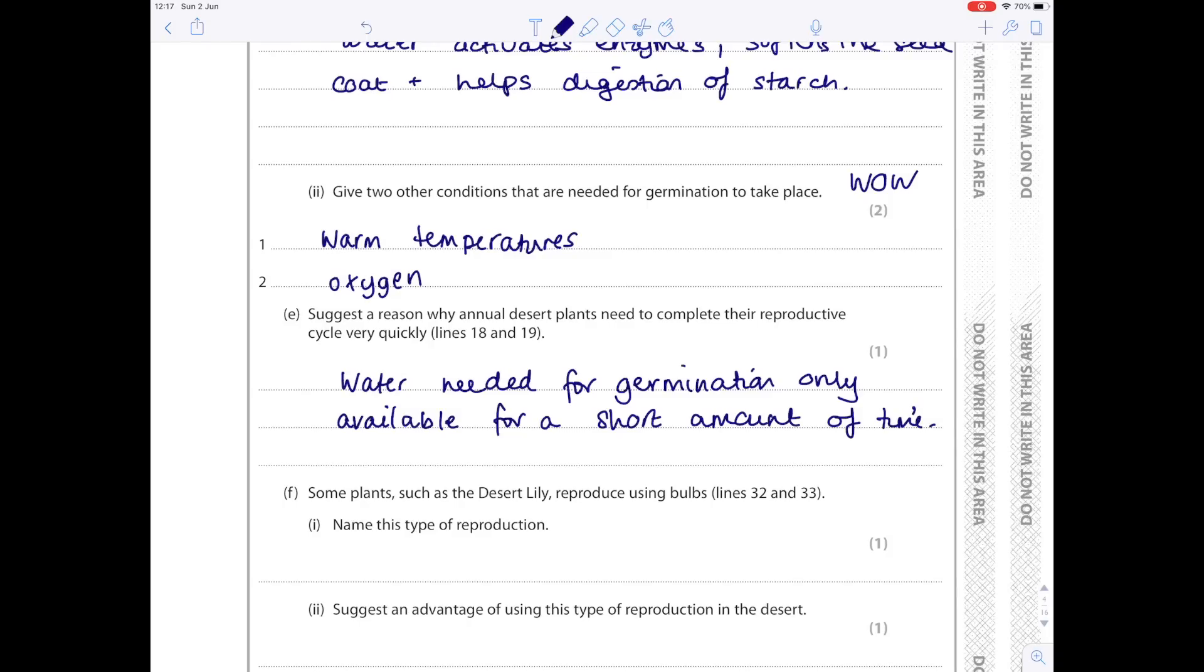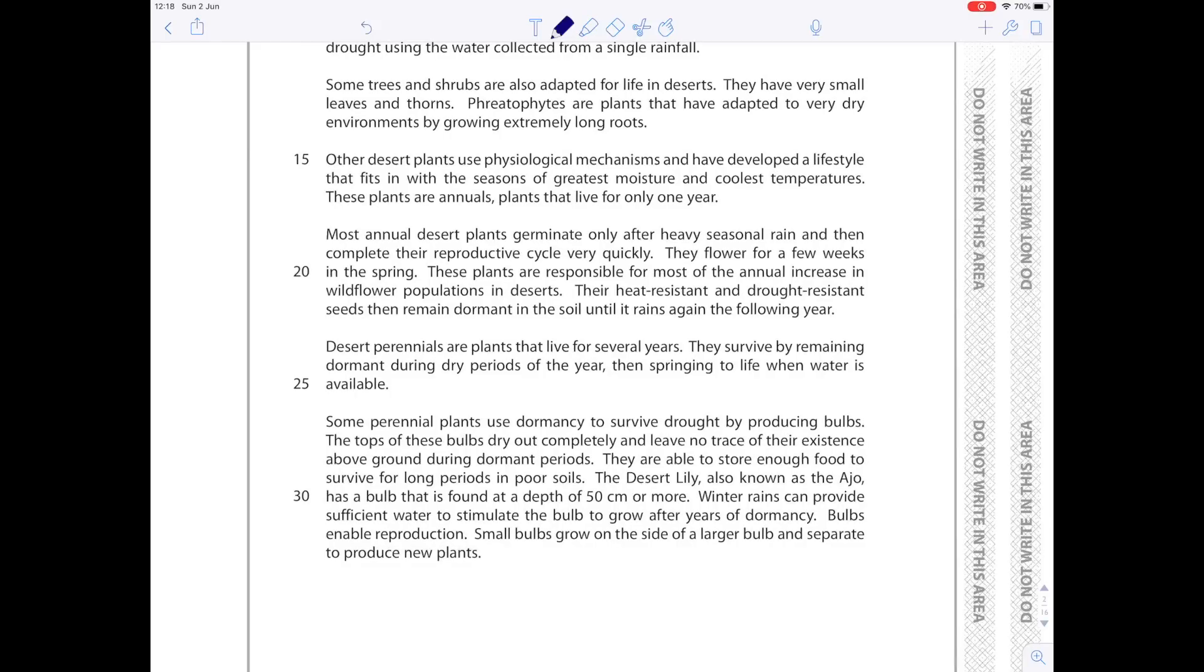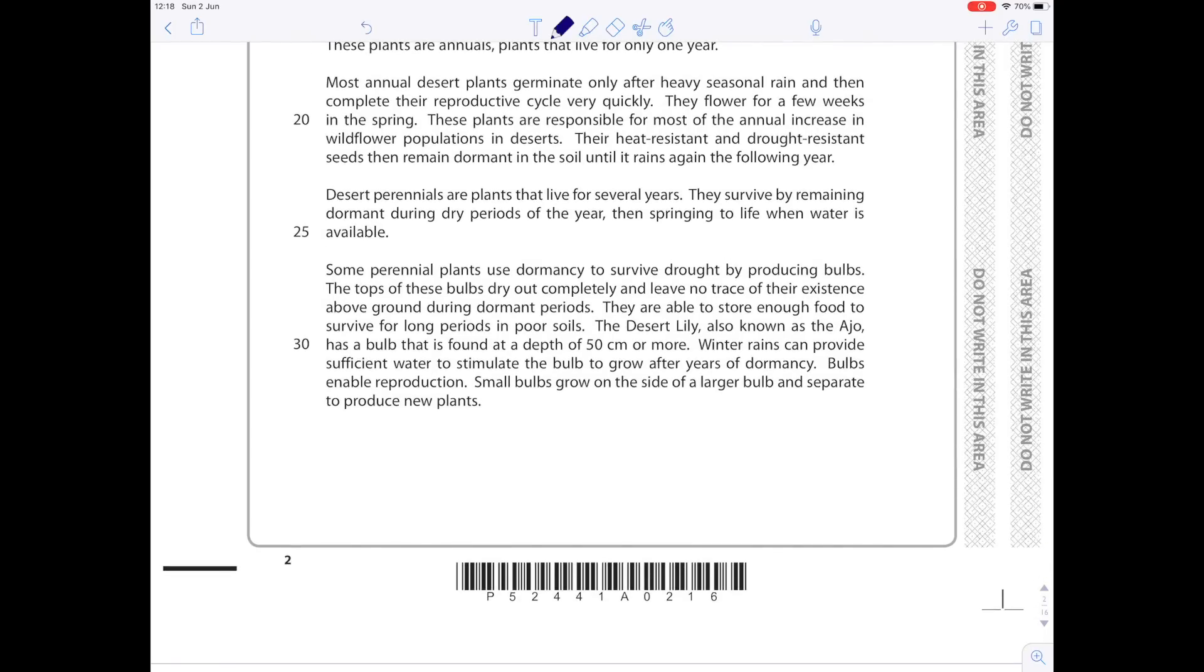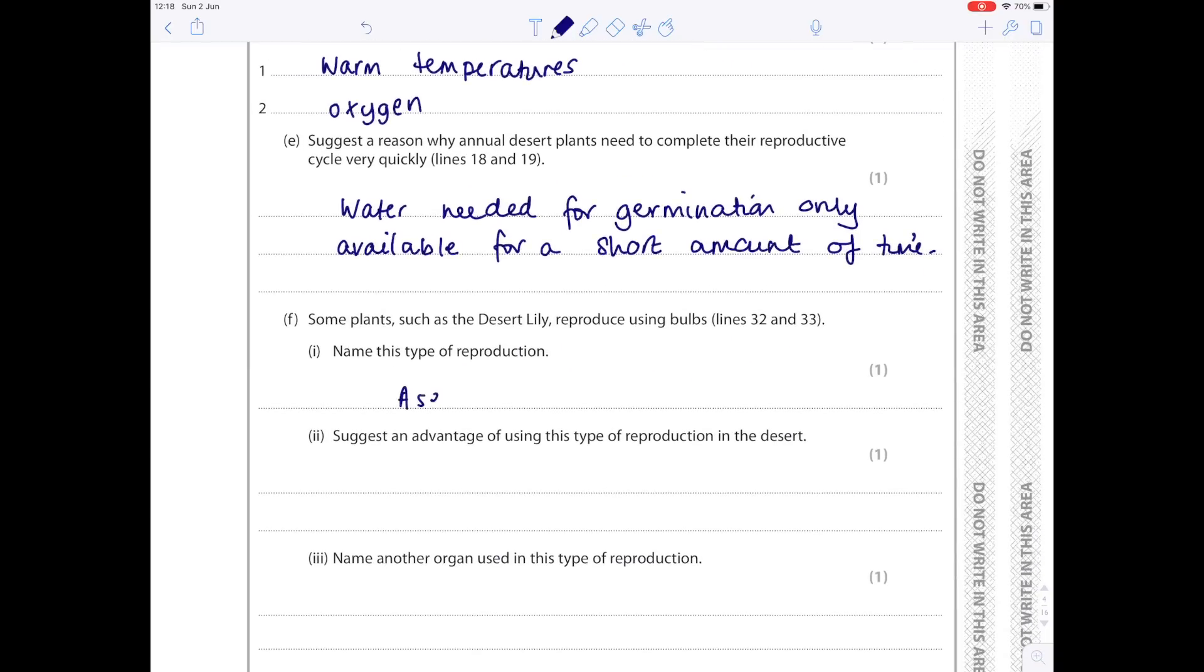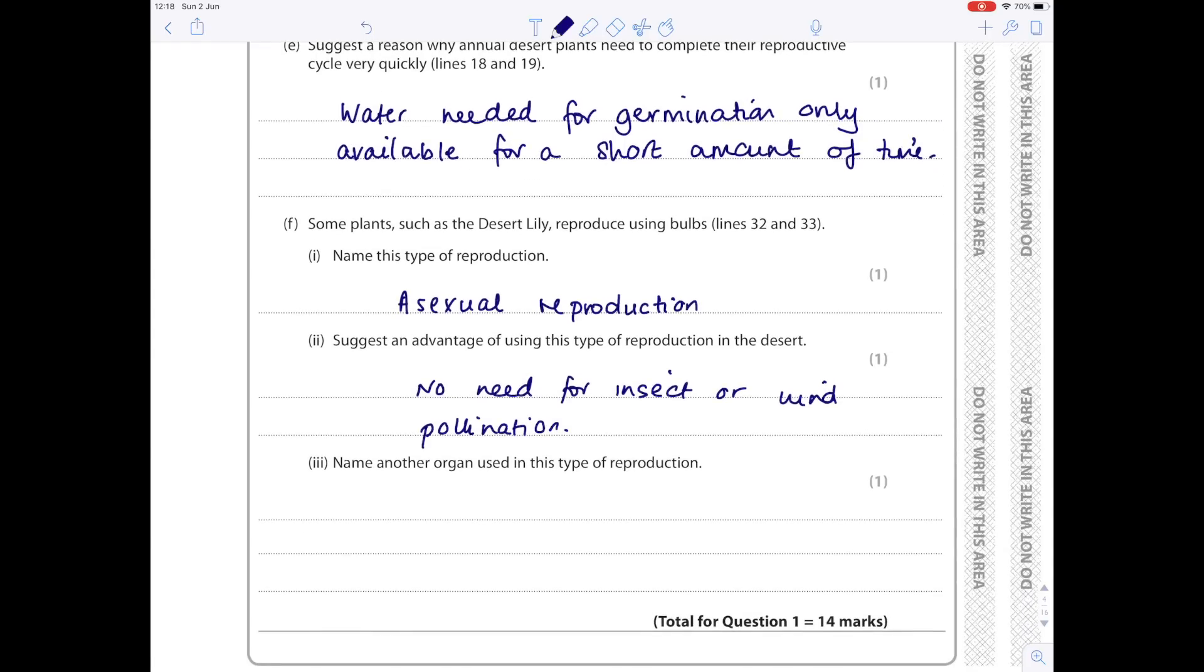Some plants, such as desert lily, reproduce using bulbs, lines 32 and 33. Bulbs enable reproduction. Small bulbs grow on the side of the larger bulb and separate to produce new plants. Actually, finally helpful. So if it's grown from the same plant, then it must be asexual reproduction. So the type of reproduction here is asexual reproduction because it grows off the main plant. There's no fusion of gametes. Suggest an advantage of using this type of reproduction in the desert? Well, you don't need insects or wind pollination. Name another organ used in this type of reproduction. We probably didn't learn about bulbs when we studied asexual reproduction. We probably learnt about strawberry runners or potato tubers. So either of those would be fine.